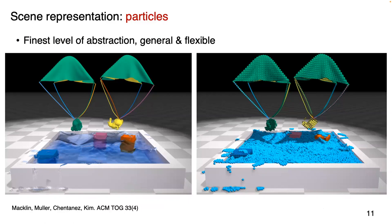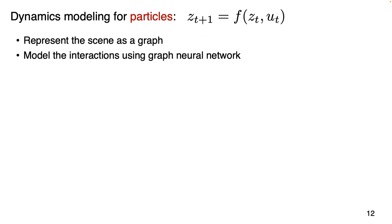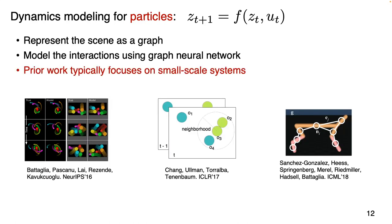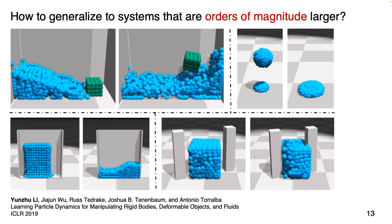Particle representations are very general and flexible, applying to objects of different materials including rigid bodies, deformable objects, and fluids. Different objects consist of particles indicating the object's geometry and interactions within and between objects. One way to model the dynamics of interacting systems is to use graph neural networks, as done by many prior works. Yet they typically focus on small-scale systems with at most 15 constituting components, whereas in our problem we aim to model systems involving hundreds or even thousands of particles, requiring innovative techniques to handle systems of this scale.